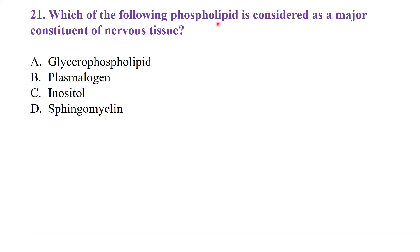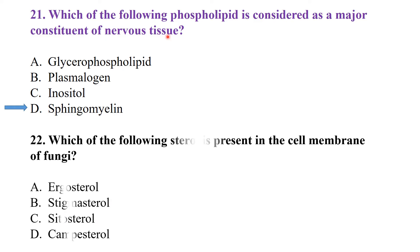Q20: Which of the following phospholipids is considered a major constituent of the nervous system? Sphingomyelin is the major constituent of the nervous system. Q21: Which sterol is present in the cell membrane of fungi? Ergosterol is present in the cell membrane of fungi.